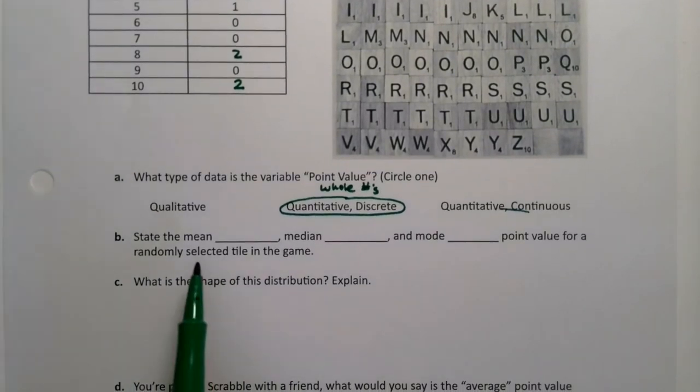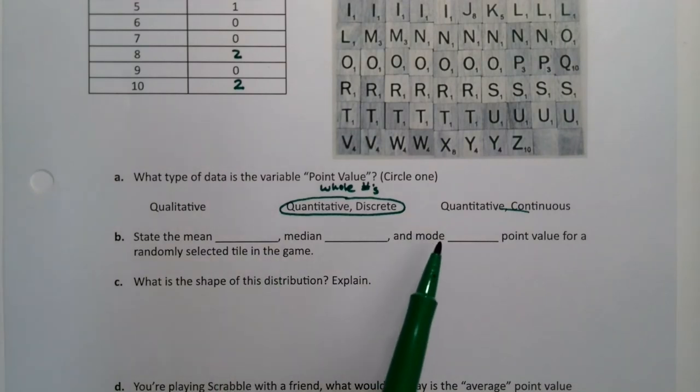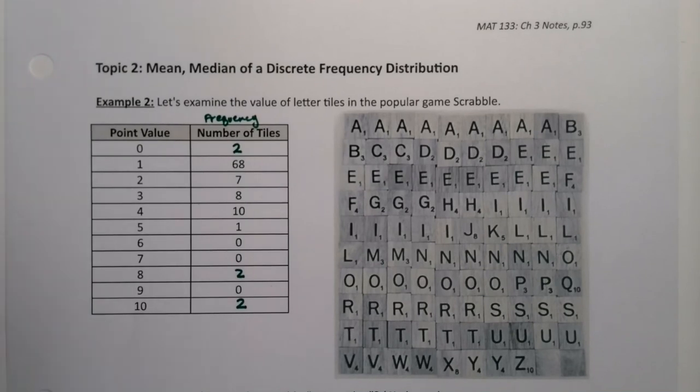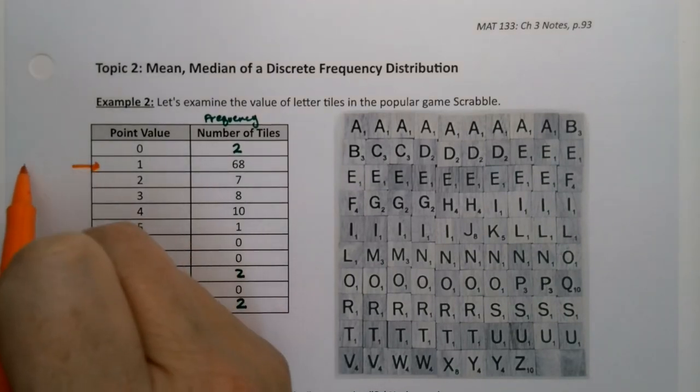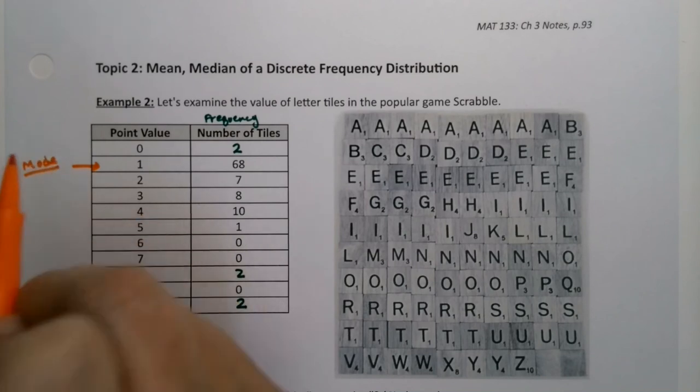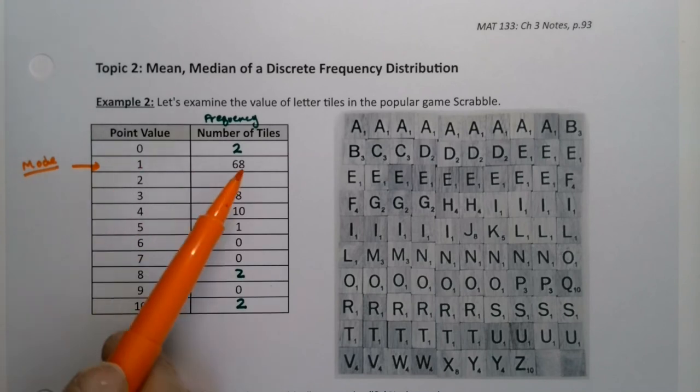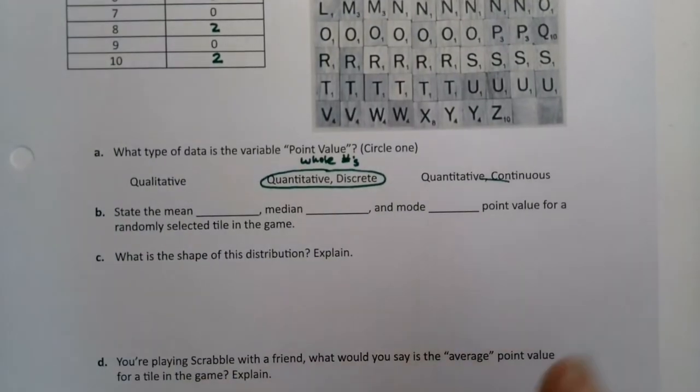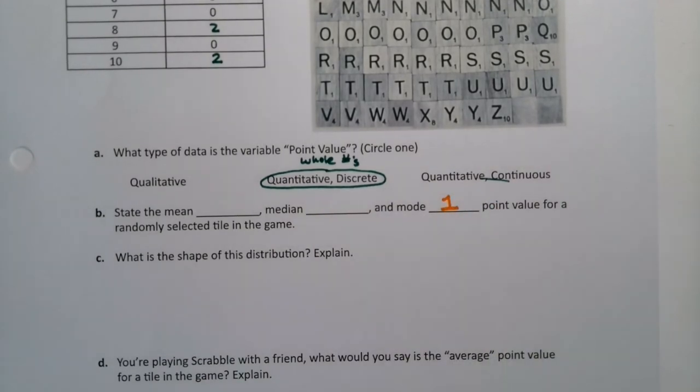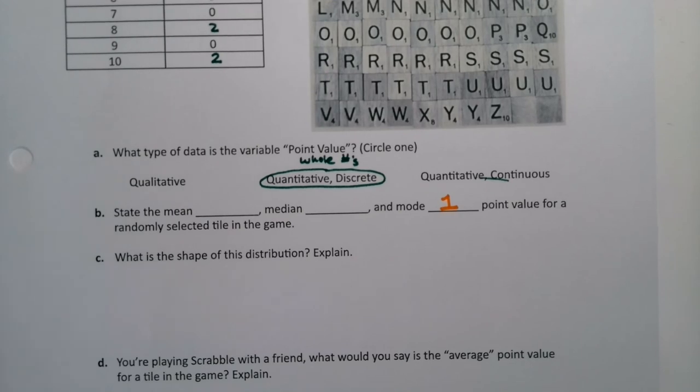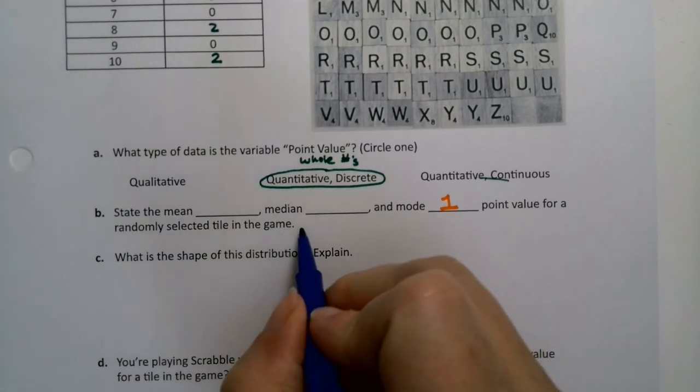So now we want to find the mean, median, and mode point value. The mode is really easy to spot because, remember, the mode is the one with the highest frequency. So the mode is right here. Now, it's not the 68. 68 is why it happens. One is the mode because one happens the most often. So a lot of students will say 68, and that's not true. It's one. One is the mode because it's the most frequent. Now, the median, I imagine, is also one, but I can prove it. And the mean, hmm, how about we use our calculator or we use StatCrunch to do this? So we're going to use technology.